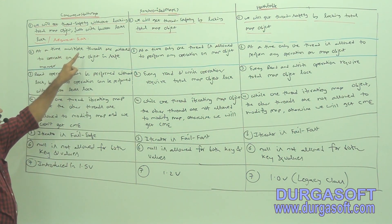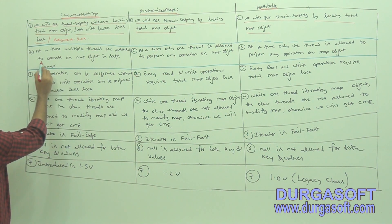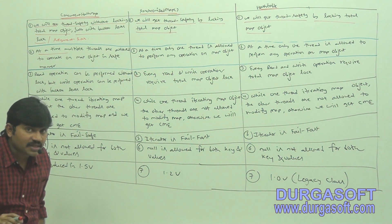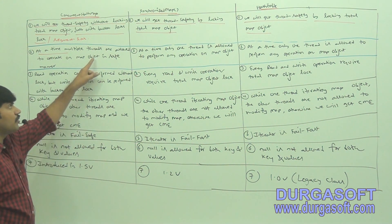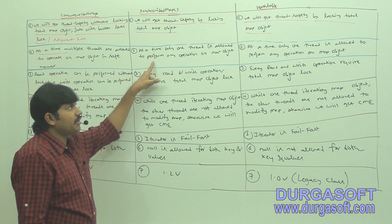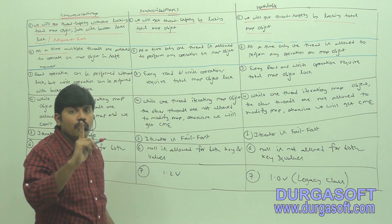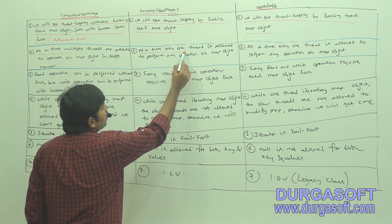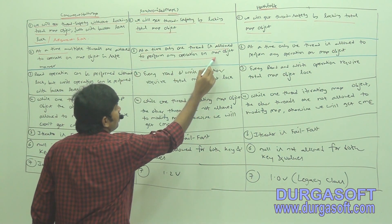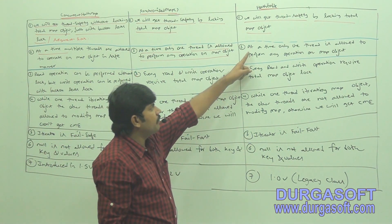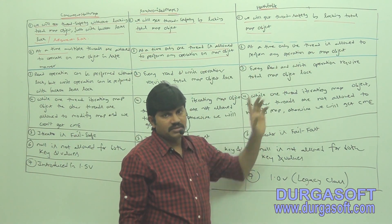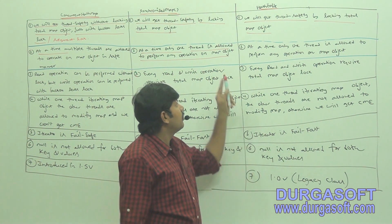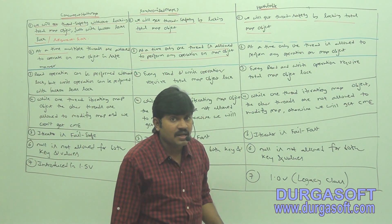Next: at a time, multiple threads are allowed to operate on the map object in a safe manner with ConcurrentHashMap — multiple threads are allowed, no problem at all. But if it is SynchronizedMap or HashTable, only one thread is allowed to operate at a time, even for read operations.